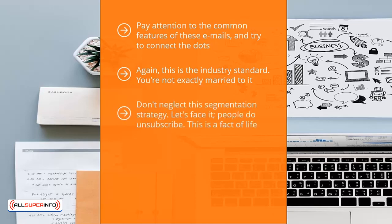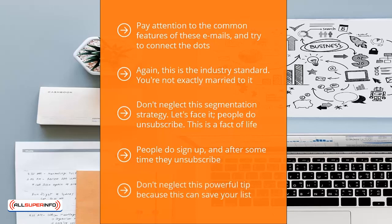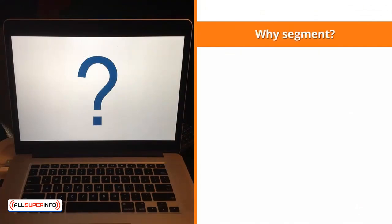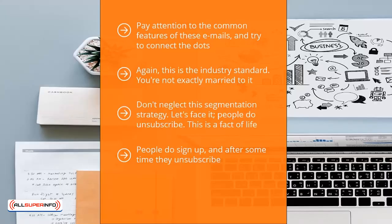Don't neglect your segmentation strategy. People do unsubscribe — that is a fact of life. Don't think that just because you offered the right incentives that people will remain loyal to your list. However, you can reduce your unsubscribe rate by simply asking people who wish to unsubscribe to change the update frequency of their membership instead. Depending on your list automation software, you can offer members a choice as to how frequently you will send them updates. This can save your list, allowing you to hang on to a large chunk of members and possibly convert them into buyers later.